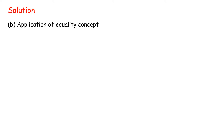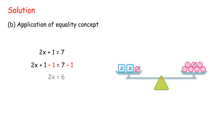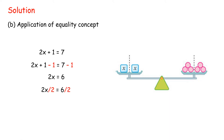Solution (b) Application of equality concept for 2x + 1 = 7. Subtract 1 from both sides: 2x = 6. In order to get x, divide both sides by 2. Thus x = 3.